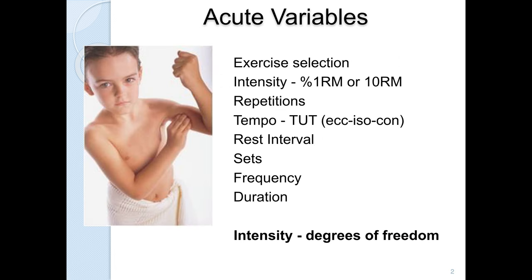When we look at the acute variables, they are how we design exercise programs. The first is exercise selection — that's the movement that you're doing. The traditional model is body part training like chest and back: bench press, seated rows, flies, pull-ups. Those are all exercises for exercise selection.